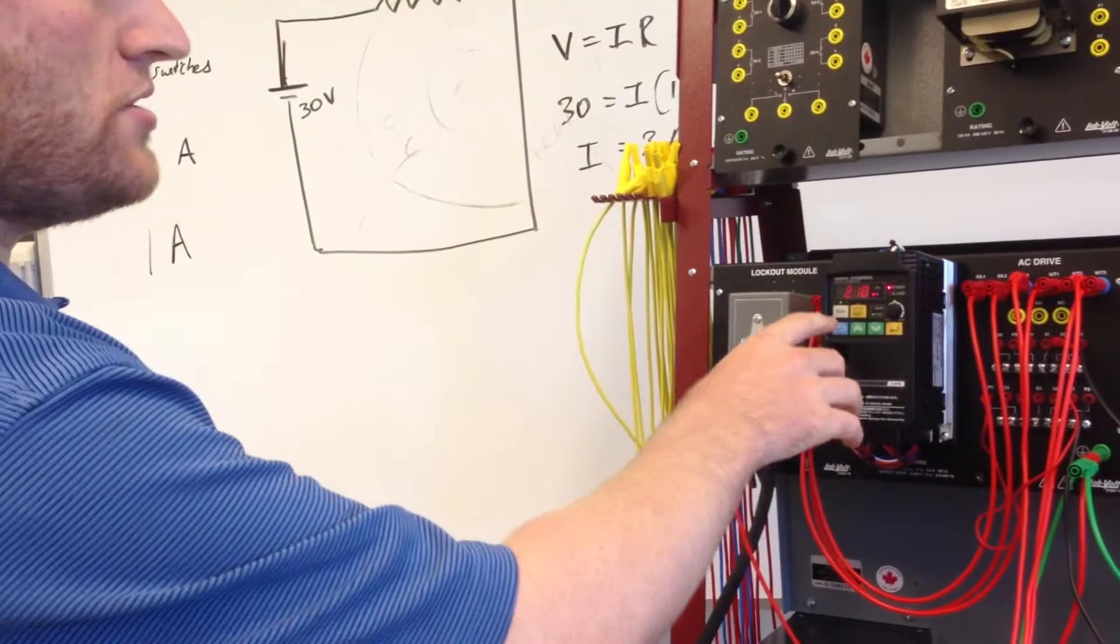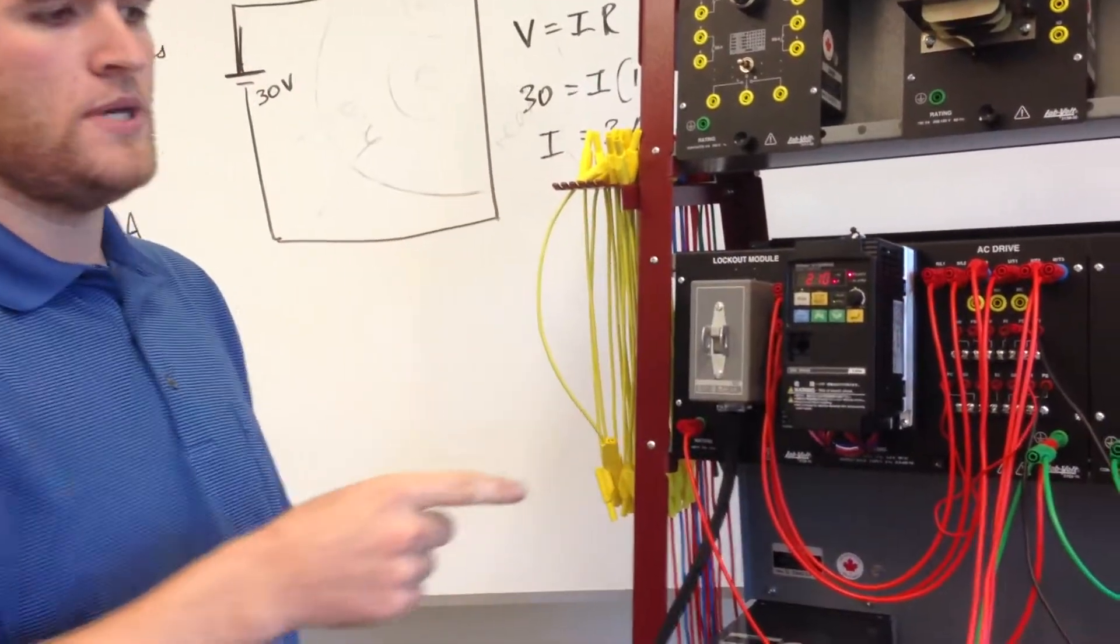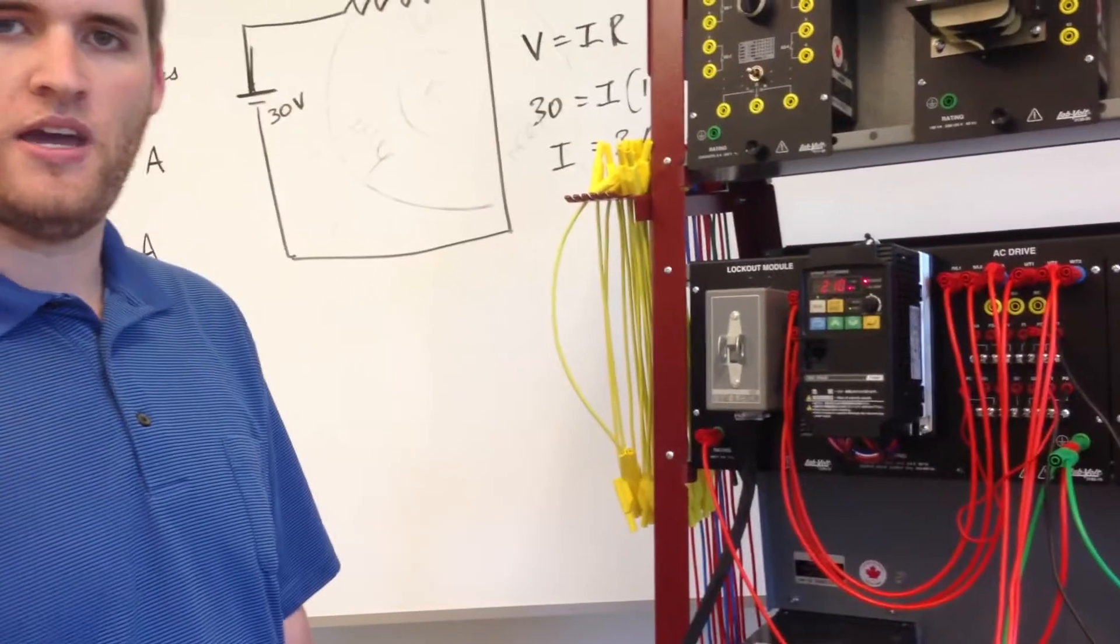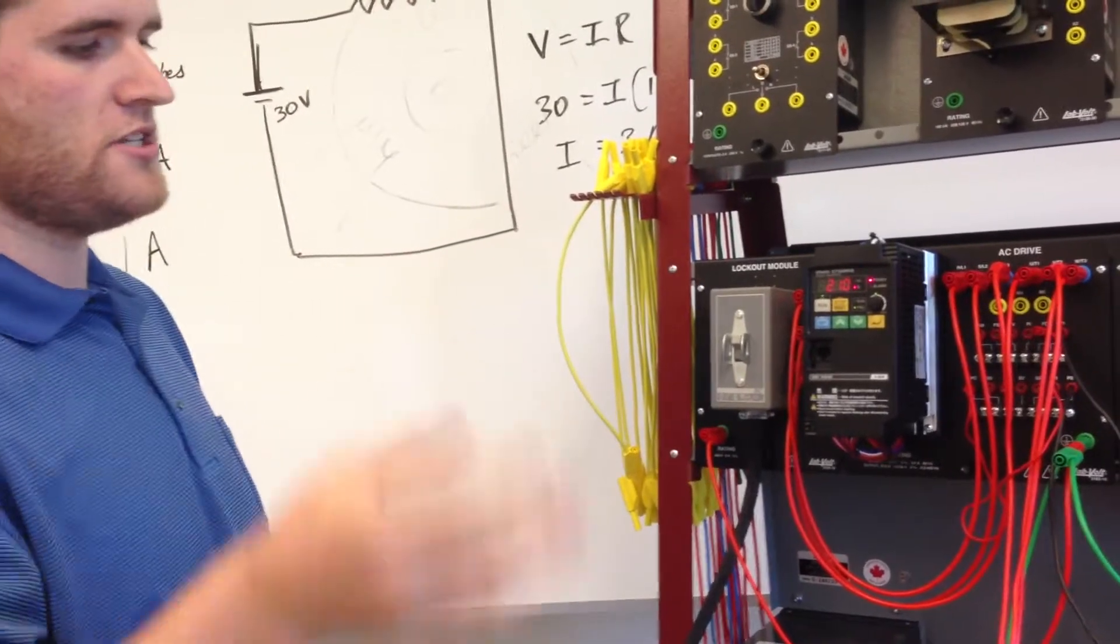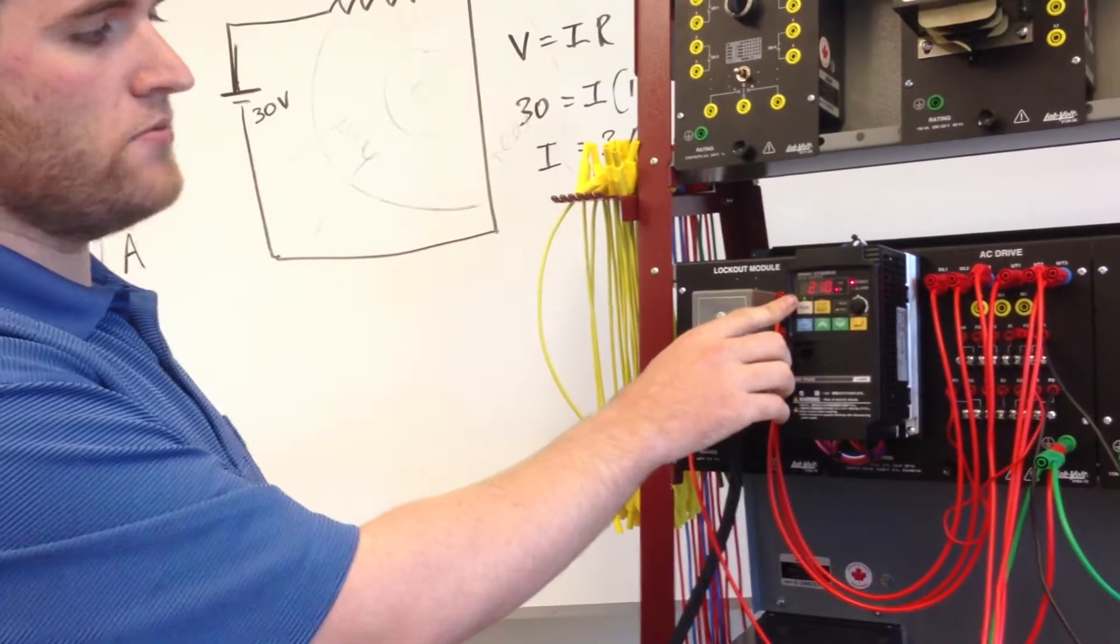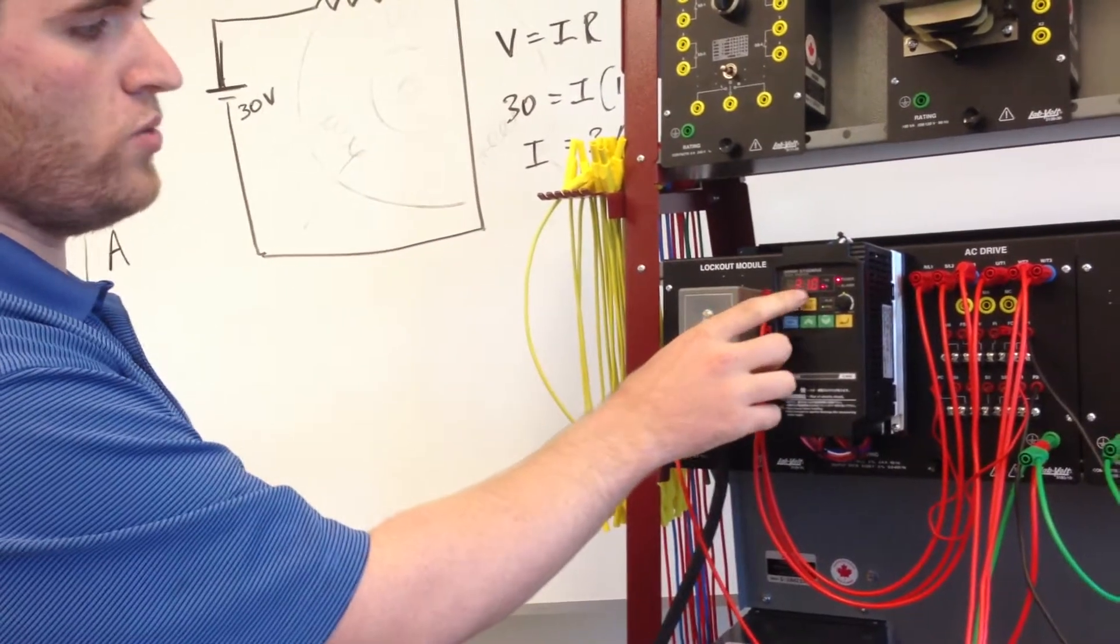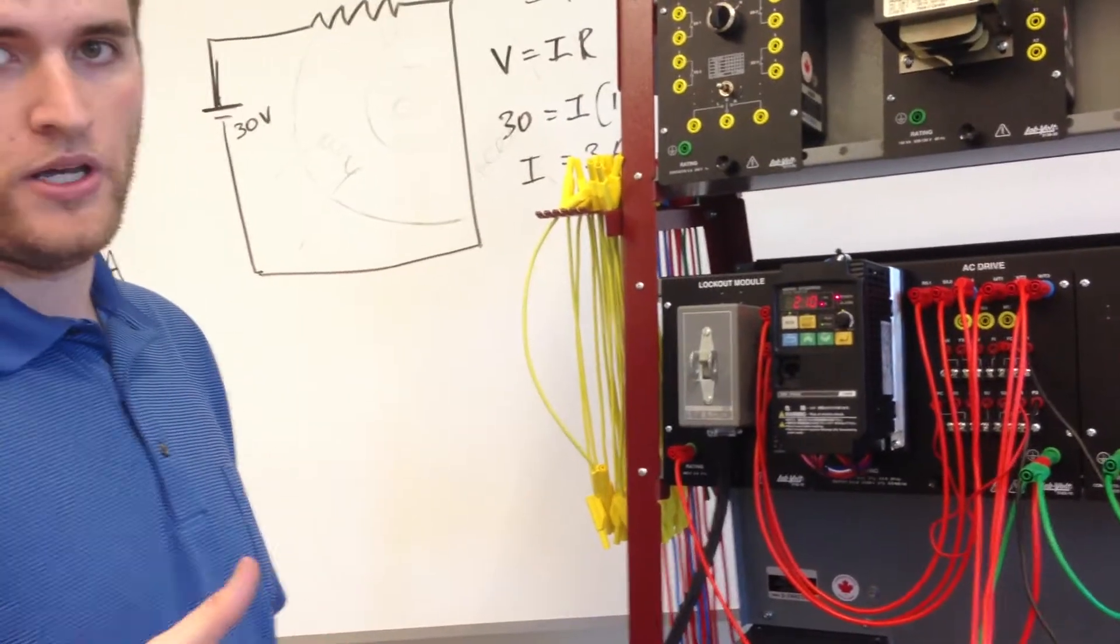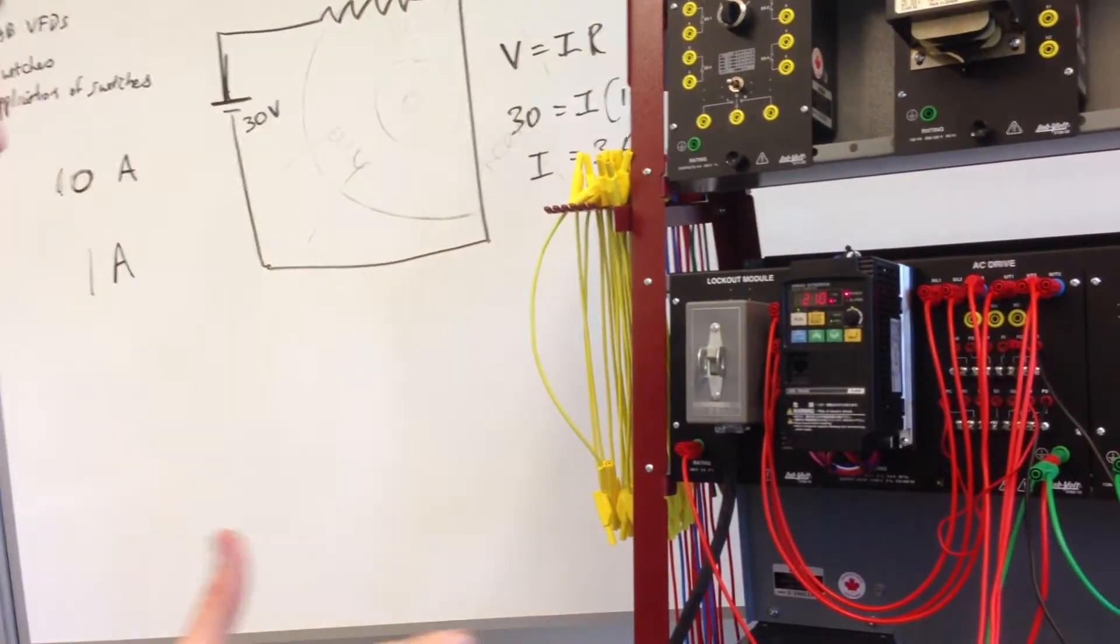What that means is once I turn that load on it's going to go to 2.3 it's going to say okay I'm overloaded and it's going to scale back the motor speed to stay at what my limit is set at. Right now you see it set at 2.1 so that's underneath what my amperage is going to be running so we're going to go ahead and trip that overload.